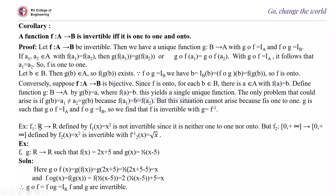For example, F1 from R to R defined by F1(x) = x² is not invertible because it is not one-to-one. Whereas F2 from [0, +∞) to [0, +∞) is invertible with F2 inverse(x) = √x because here only positive numbers are considered. Whether a function is invertible or not depends on its domain and range. For example, if F(x) = x + 5 and G(x) = (1/2)x − 5, then Gof(x) = Fog(x) = x, therefore F and G are invertible functions.